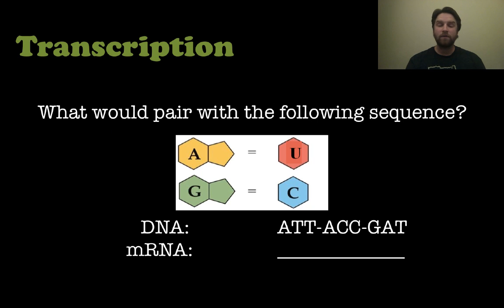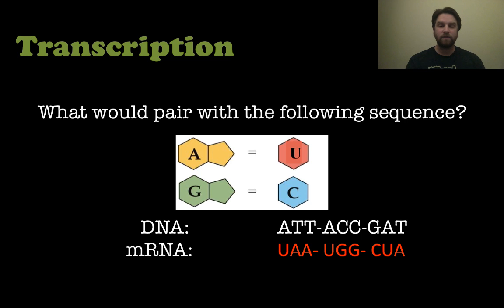So what would pair with the following DNA sequence? If the DNA is ATT, ACC, GAT, what will the messenger RNA look like? A's pair with U's and G's pair with C's. Notice the messenger RNA has no T's in it whatsoever — there is no thymine in RNA.